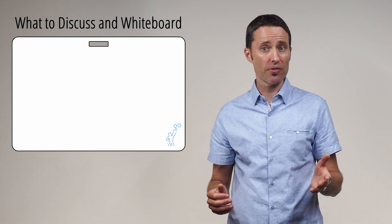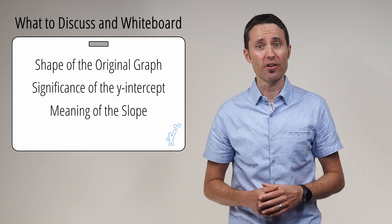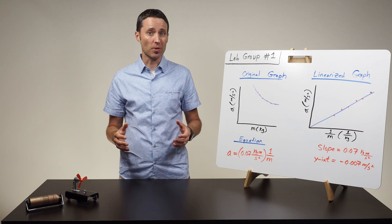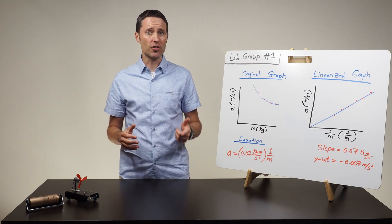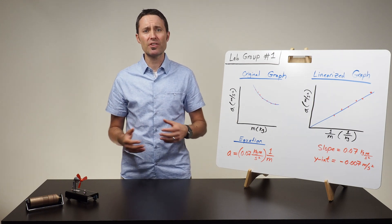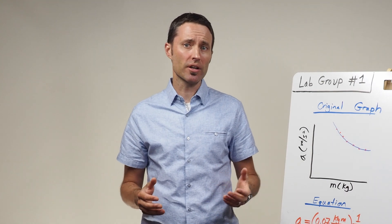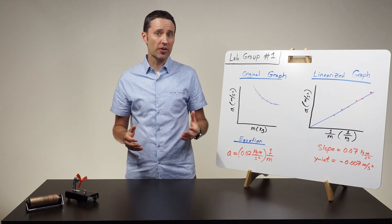Teaching students how to linearize their non-linear graphs might seem like a lot of extra work, but the payout will come during the conclusion discussion. Before the students circle up to share their results, ask each lab group to discuss the shape of the original graph and the significance or meaning of both the slope and the y-intercept of their linearized graph equation. To facilitate a whole-class conversation, have each lab group record their original graph, linearized graph, and resulting equation on a large whiteboard. Have the class circle up so that everyone can clearly see the graphs and equations on each whiteboard, and facilitate a conversation that allows students to make connections and draw conclusions.